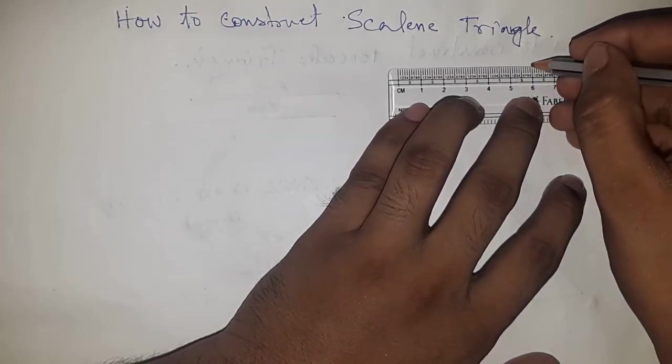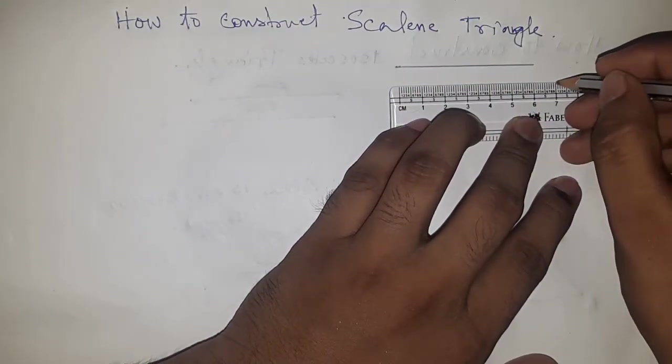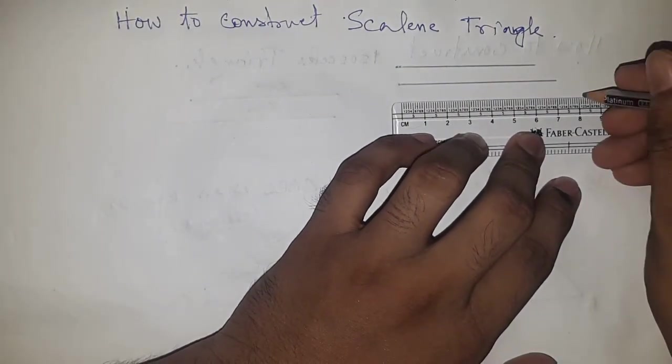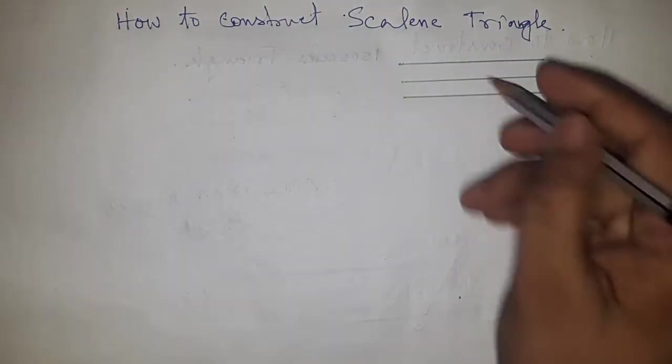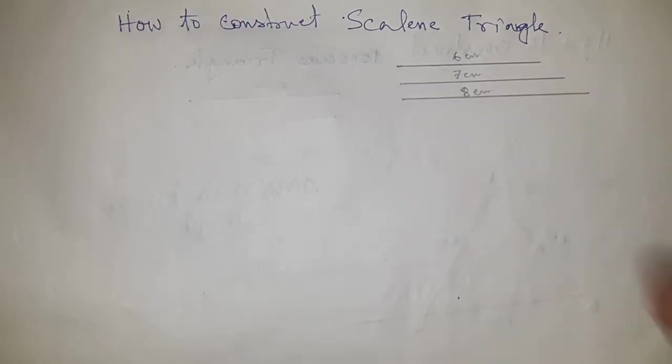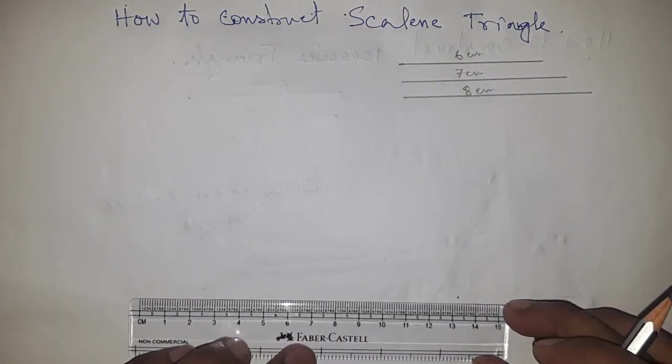First, we'll draw the three sides of the triangle here. The first side is 6 centimeters, the second is 7 centimeters, and the third side is 8 centimeters.